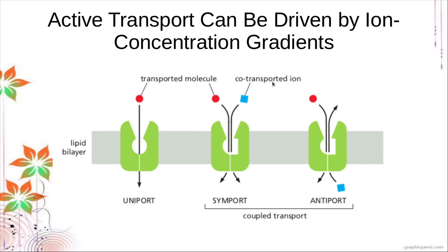For coupled transporters, we have two types. The usual transporter by default is a uniport, specific to one solute and transporting only one type at a time. But for coupled transport, since they transport two solutes simultaneously, they can bind both solutes at the same time. Even though they bind two different solutes, they retain specificity for each solute — solute 1 has a different binding site than solute 2 — and that is how they drive active transport using the concentration gradient of another solute.